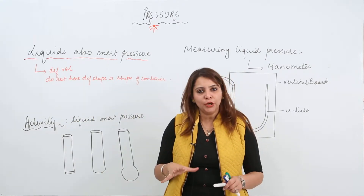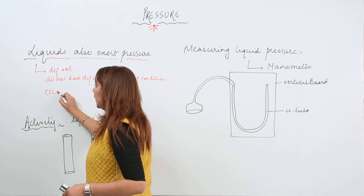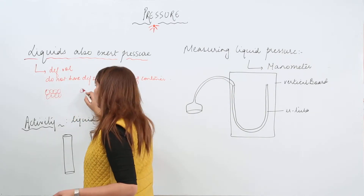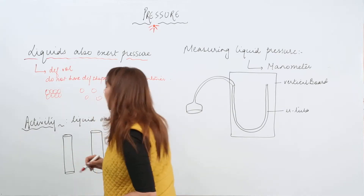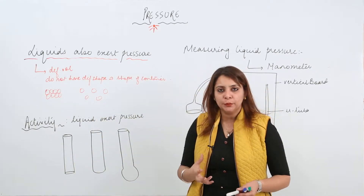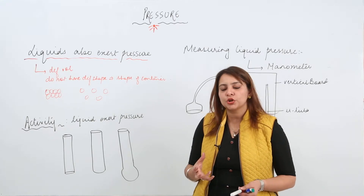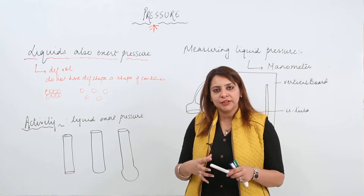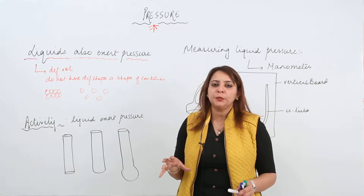Liquid consists of molecules. In solids, the atoms or molecules are tightly packed. But in liquids, they are slightly away — these particles have spaces between them. So they can move around; they are in continuous motion. When they are moving, they are colliding with each other and also with the walls of the container in which the liquid is present.